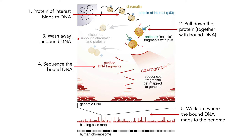The third step is to wash away any unbound DNA, so what you're left with is DNA bound close to the protein of interest while all the other DNA is washed away. The fifth step is to sequence the bound DNA — just standard sequencing as seen in the last seminar. Then there's a bioinformatic step where you work out where the bound DNA maps onto your genome.